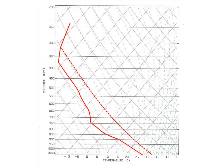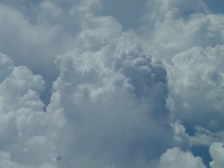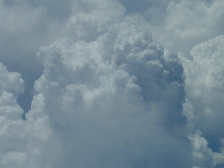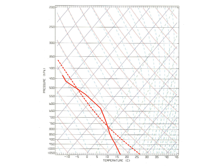Instability often leads to thunderstorms — in fact, it's required for thunderstorms. For this to be plotted, the temperature line will be to the left of the dry adiabat line. Following the dry adiabat line from our starting temperature, when it intersects the forecast temperature line, the thermal runs out of its ability to rise further. Our ability to climb on it will be at a lower altitude than that.